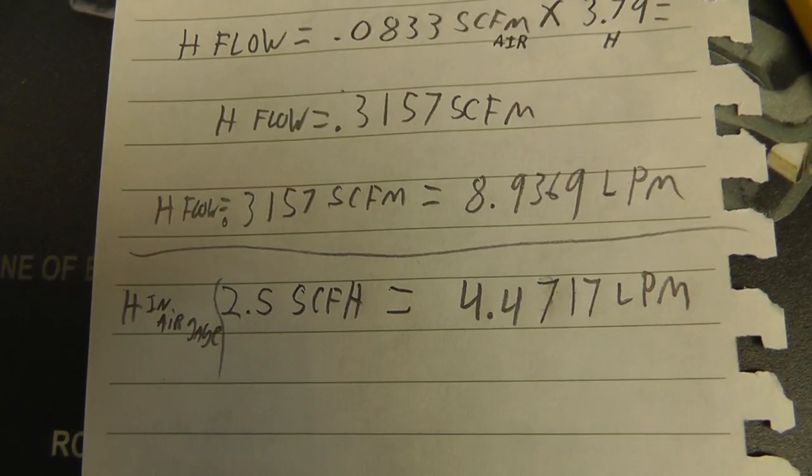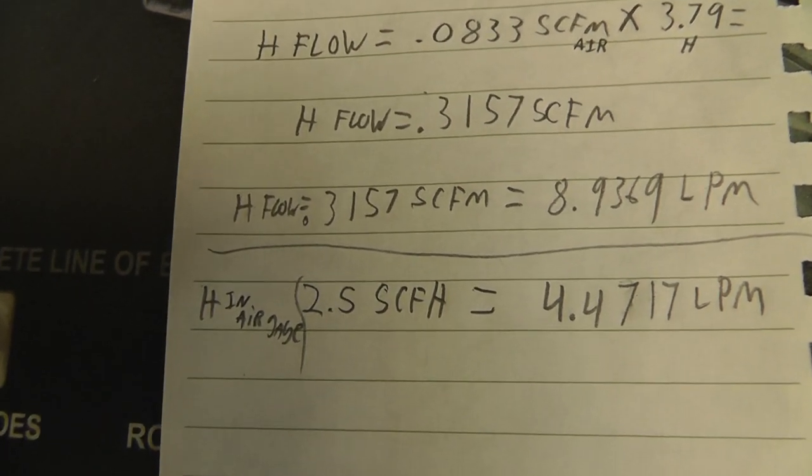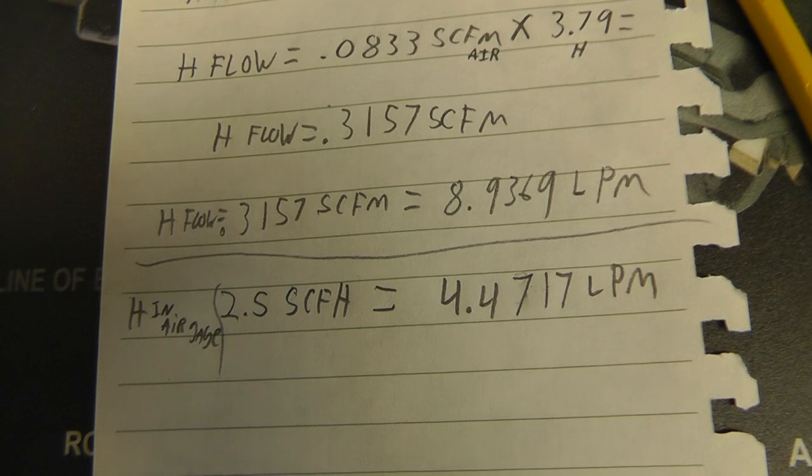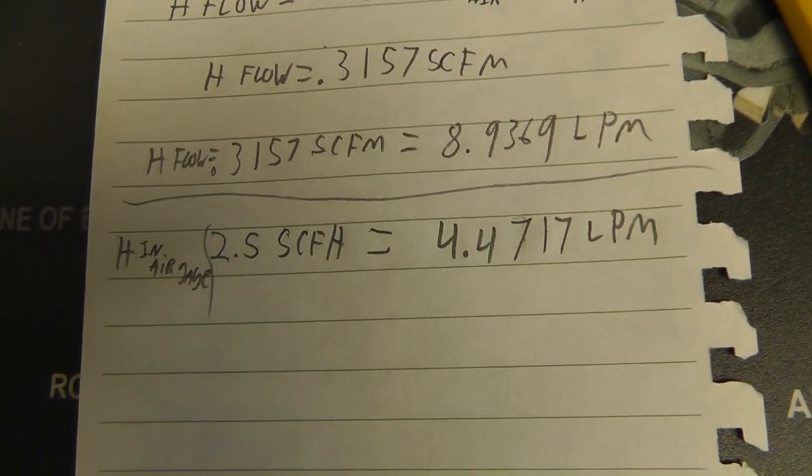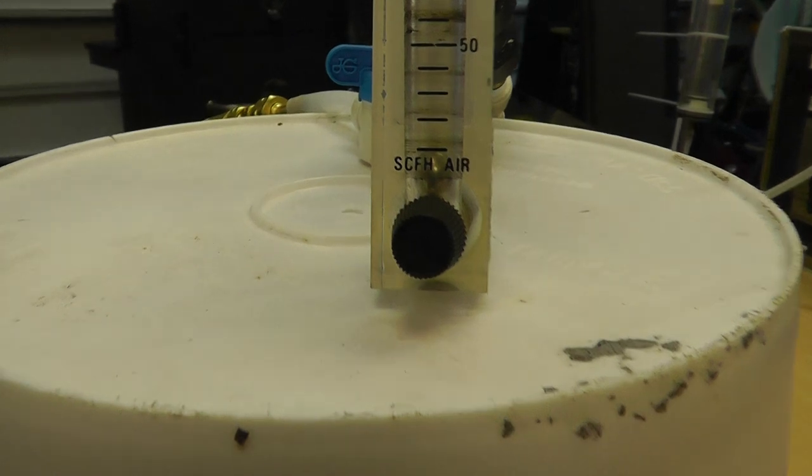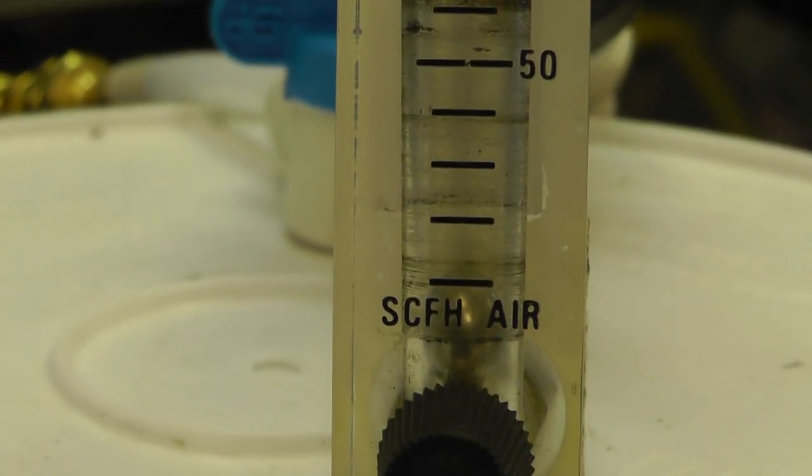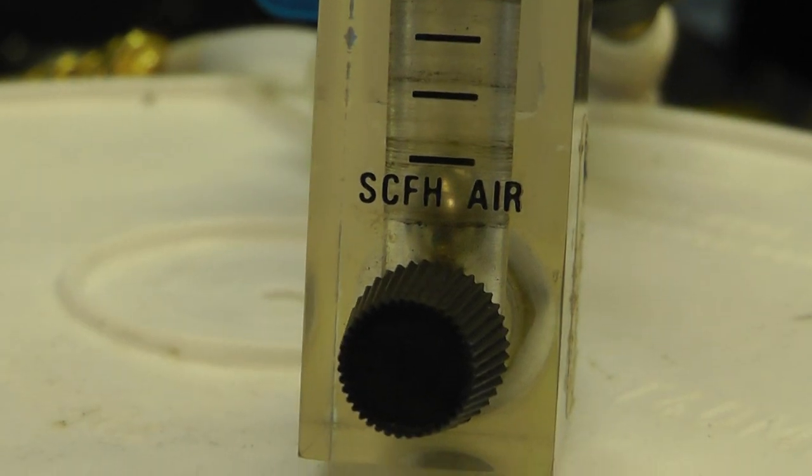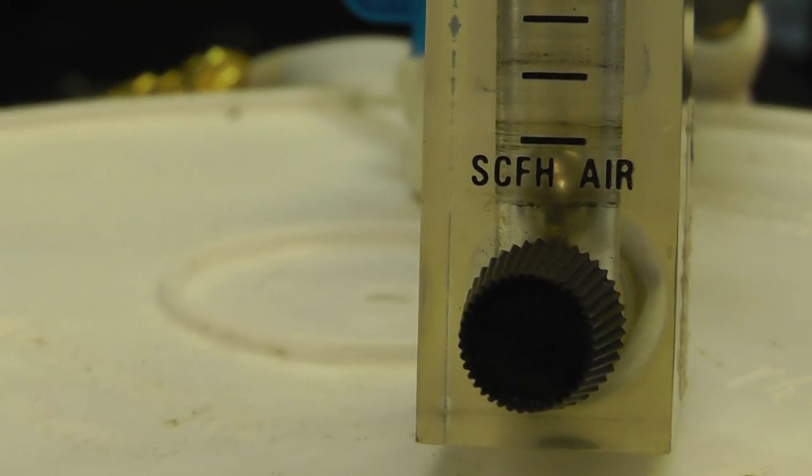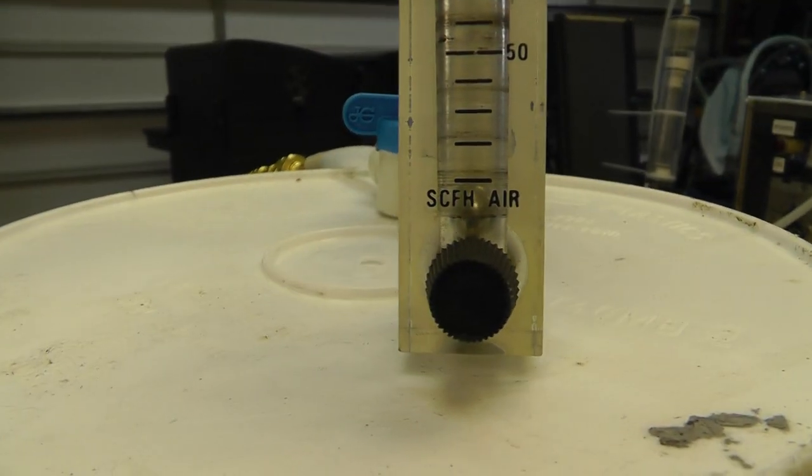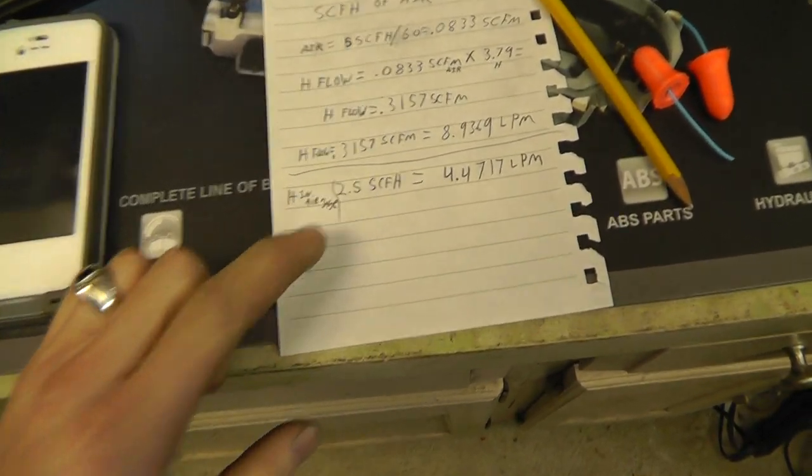If I calculate it at 2.5 SCFH, we come up with a number of 4.4717 liters per minute. Now what's interesting, this particular gauge, the minimal amount that it will actually be even marked at is 10. This ball does not even move in this gauge. That's how little bit of hydrogen I'm actually using to run this engine on idle, or at least to keep it moving.